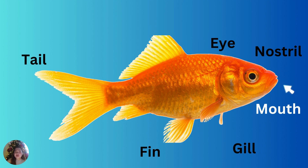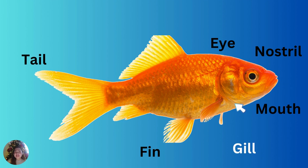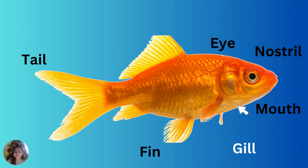Fish take water through their mouths, then push the water out through the slits from behind their head. Inside the slits are gills. Gills look like red brushes. Gills take oxygen from the water so that the fish can live. Good job!